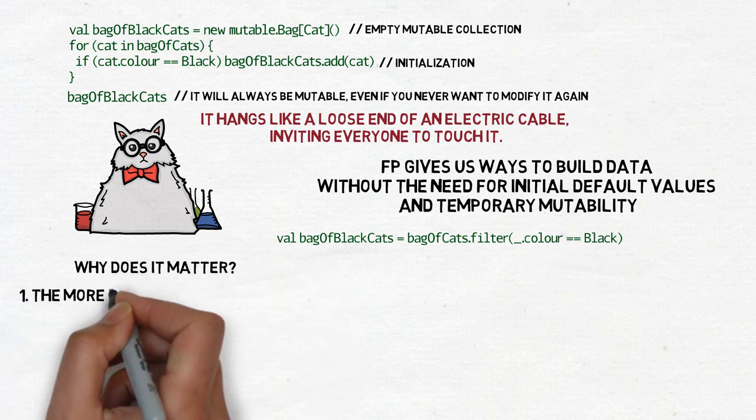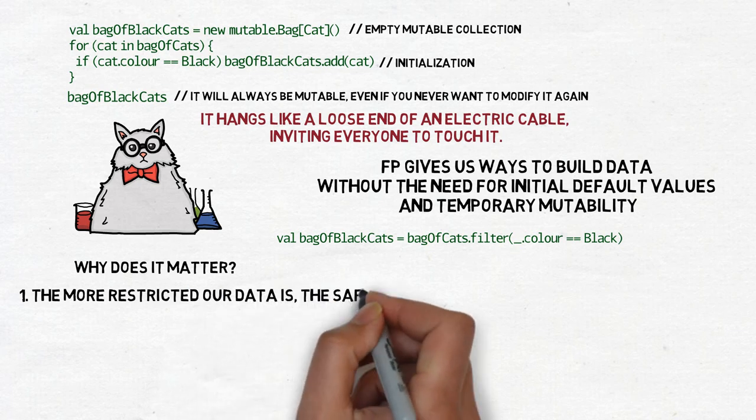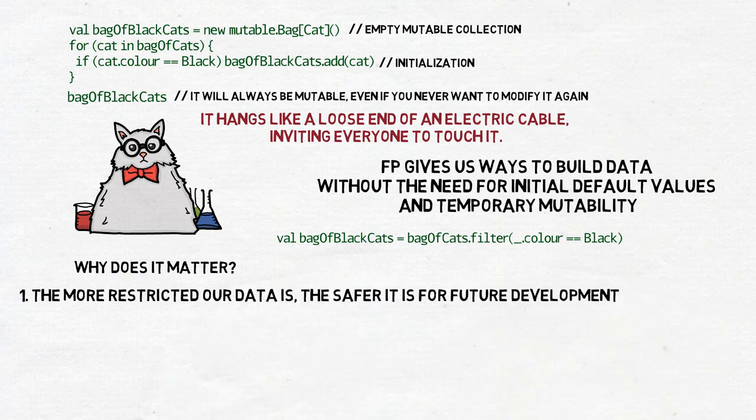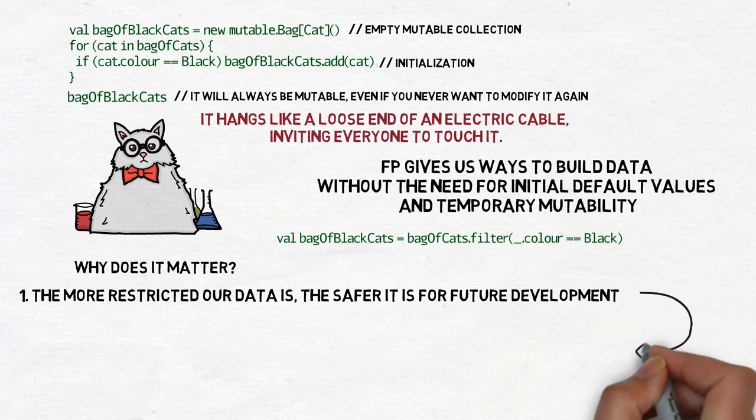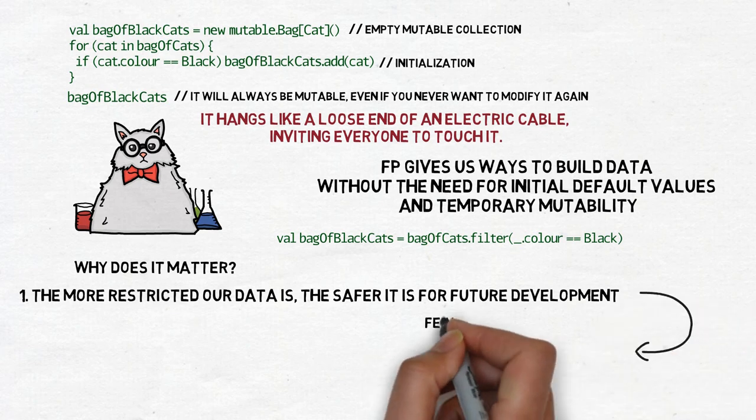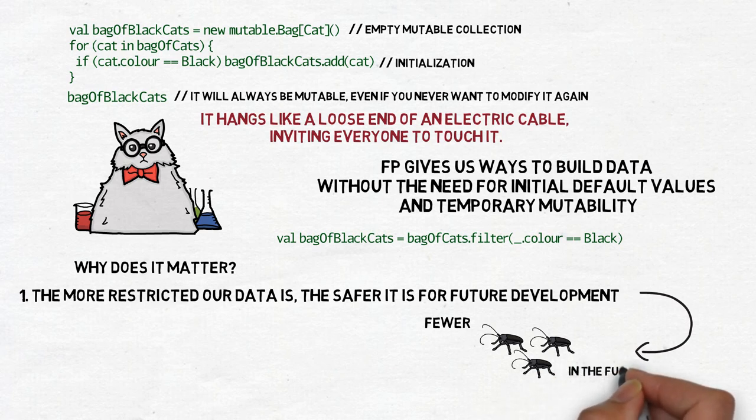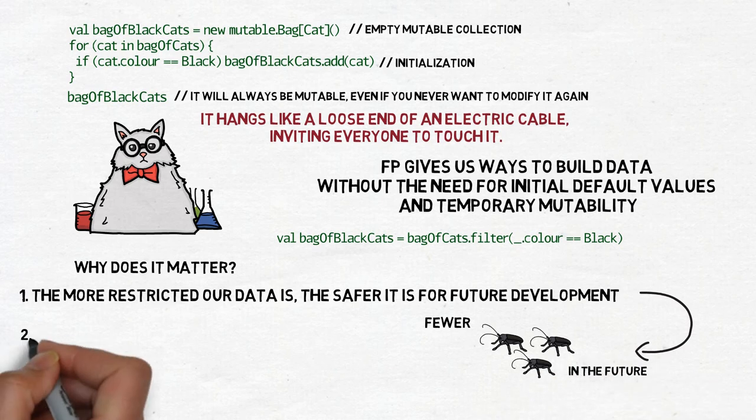Why does it matter? First, the more restricted our data is, the safer it is for future development. By saying that this data structure should not be modified, we not only give the compiler more information, but also we give that information to future developers working on the same piece of code, leaving them in no doubt about what they can do with it. It will result in fewer bugs in the future.